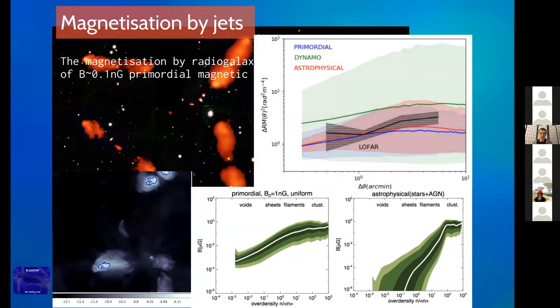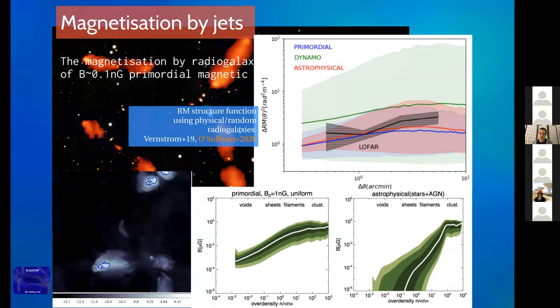Also very interesting — mentioned a couple of times this morning — is recent work trying to detect the structure function of rotation measure from the lobes of distant radio galaxies, to understand what rotation measure is provided by the intergalactic medium external to the lobes. That's work by Shanoa Sullivan using LOFAR, and the interesting result is that present LOFAR data seems to imply that either the primordial field should be lower than a fraction of a nano-Gauss, or that signature can be compatible with what radio galaxies should be able to produce there.